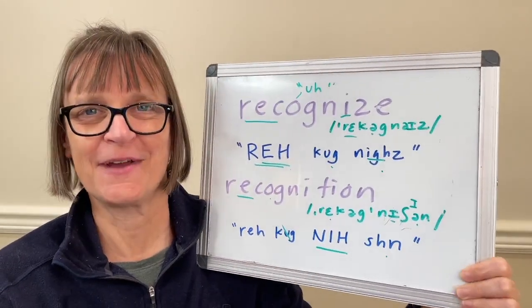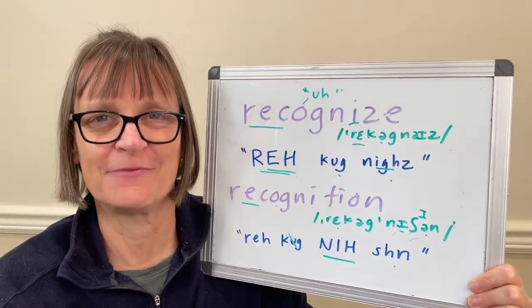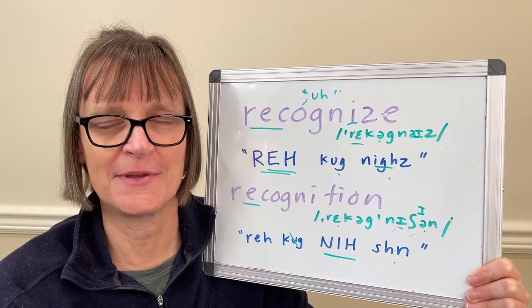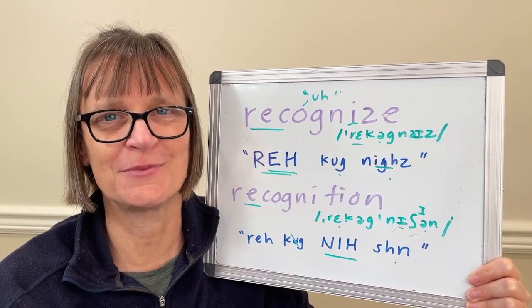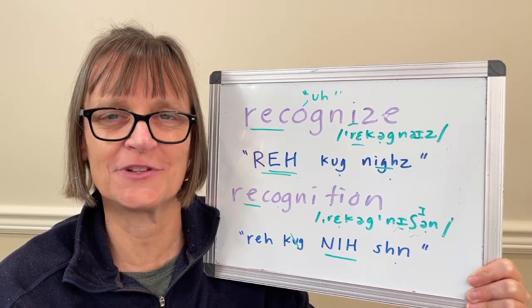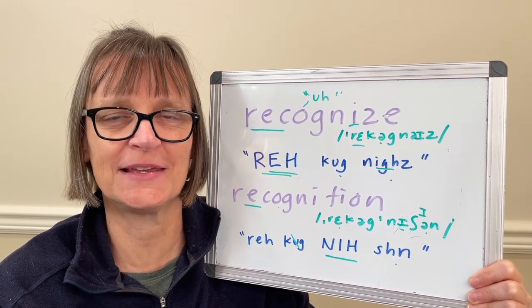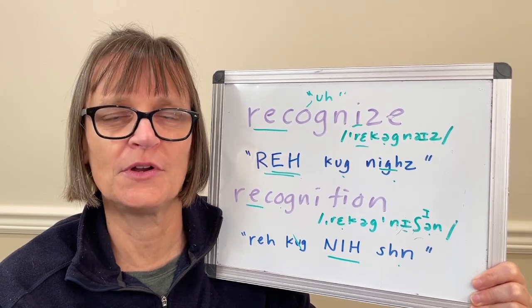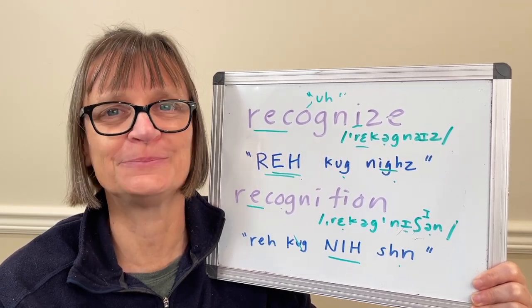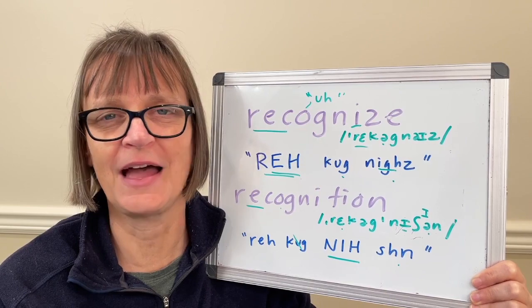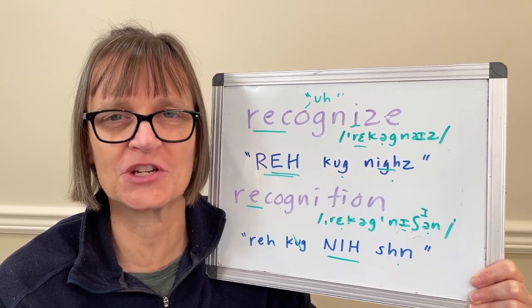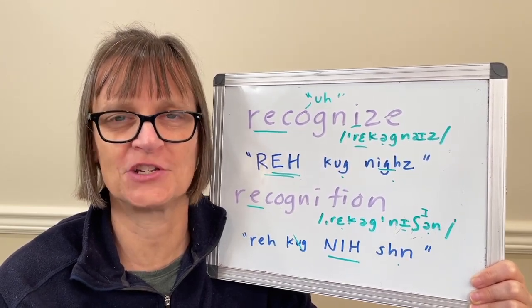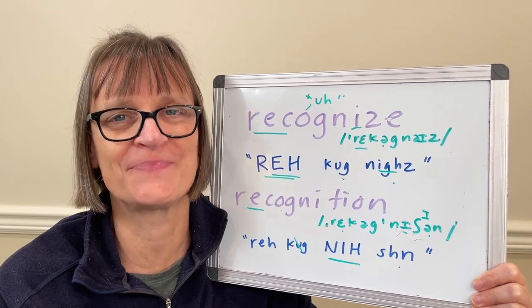Once you can say 'recognize' and 'recognition' by themselves, try practicing them in short phrases so they come smoothly and naturally when you're speaking. For example: 'I recognize that word.' 'Do you recognize her?' 'I have no recognition of that.' 'Facial recognition is new technology.'